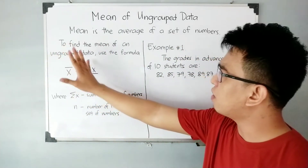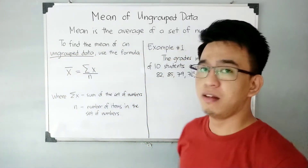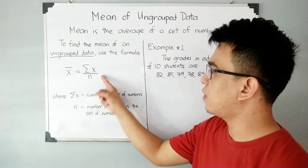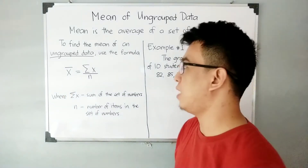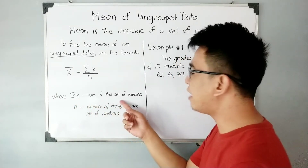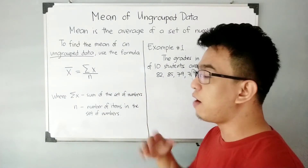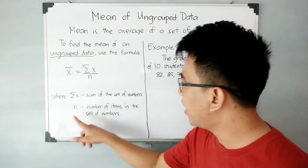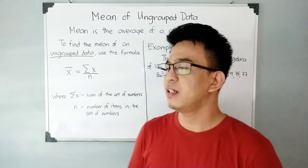To find the mean of an ungrouped data, I want to give emphasis to this formula: x̄ is equal to the summation of x over n. This x̄ is the symbol for mean. The summation of x is the sum of the given set of numbers — meaning you need to add all the data in the given number set. And n is the number of items in the set of numbers.